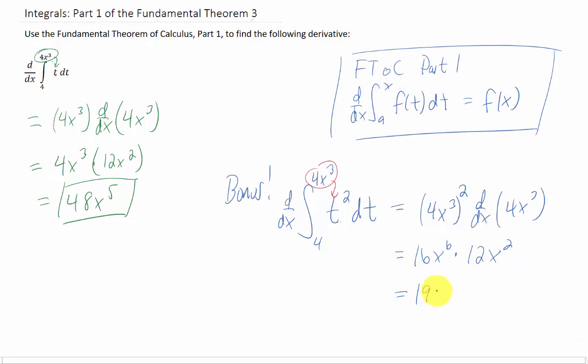My calculator says that 16 times 12 is 192. And x to the sixth times x squared is x to the eighth. And that would be the answer for that bonus problem. All right, two problems in one. I like it.